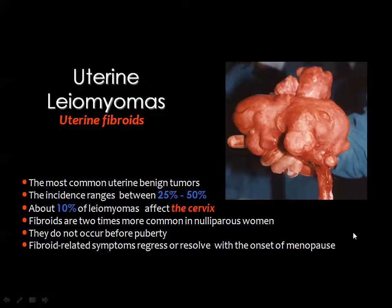We now start with one of the common pathologies affecting the uterus: uterine leiomyomas or uterine fibroids. This is the most common benign uterine tumor with an incidence of about 25–50%. About 10% of leiomyomas occur in the cervix but most are seen in the uterine corpus. They are very common in nulliparous patients and also after menopause.